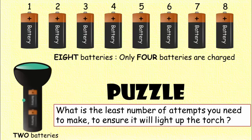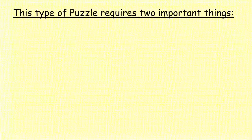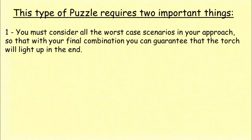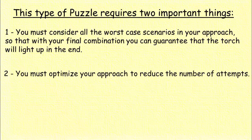Pause for a while and try to come up with the best approach. This type of puzzle requires two important things. One, you must consider all worst case scenarios in your approach so that with your final combination you can guarantee that the torch will light up in the end. Two, you must optimize your approach to reduce the number of attempts.